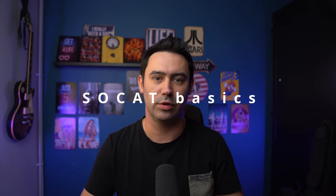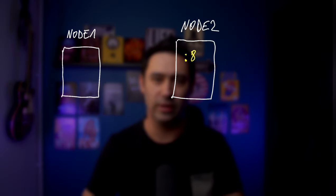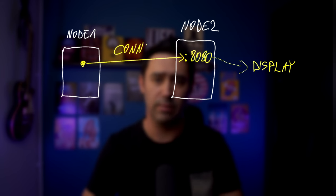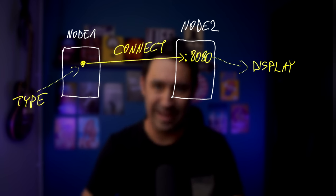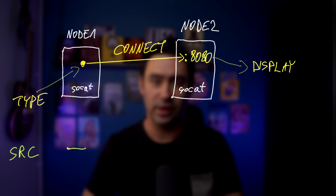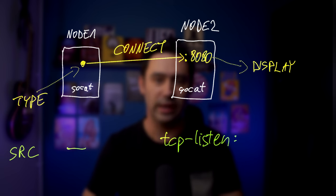Let's begin with a very simple scenario to familiarize ourselves with how SOCAT works. Let's imagine having two servers, node 1 and node 2. We'd like to listen on TCP port 8080 on node 2 and display whatever we receive on the screen. On node 1, we'd like everything typed from the keyboard to be sent to node 2 port 8080. We'll be needing two SOCAT instances. The first instance source is dash for standard input; the second instance source is TCP-listen 8080.